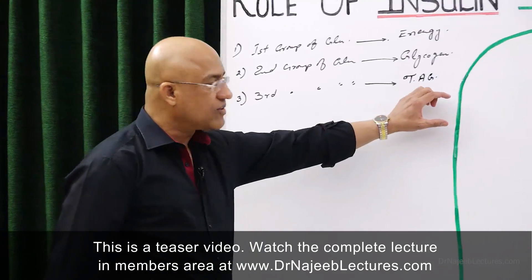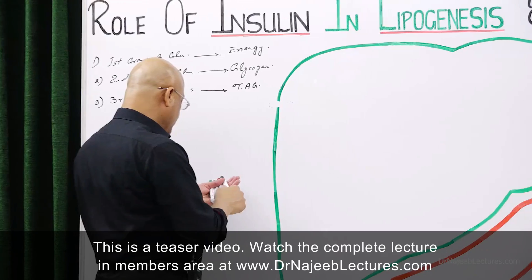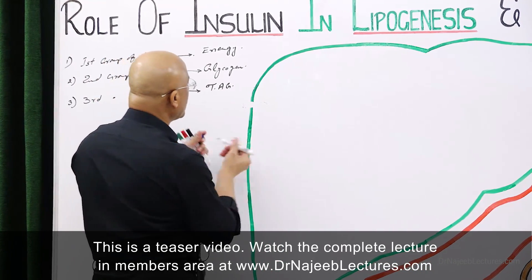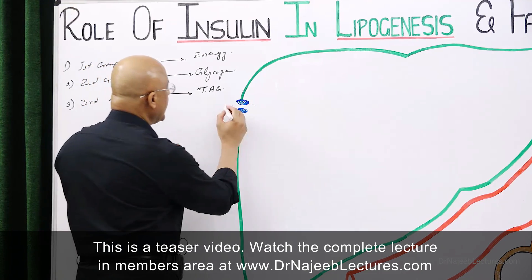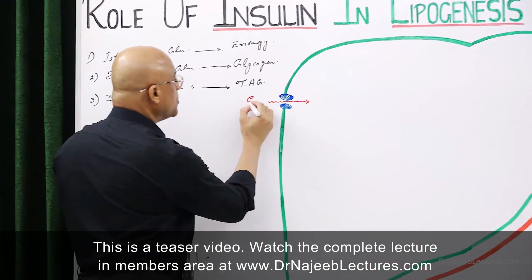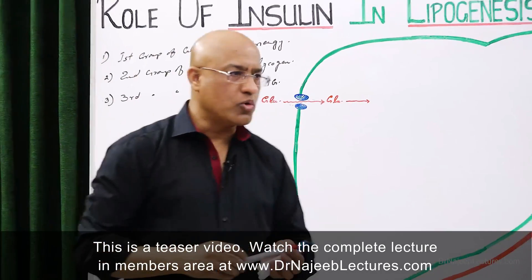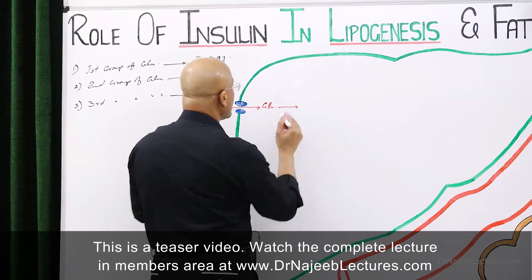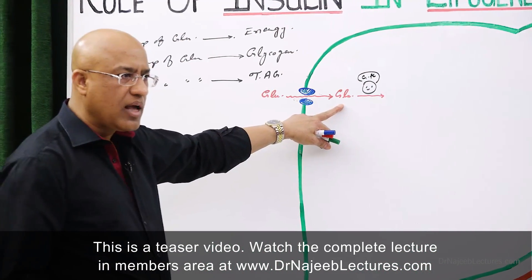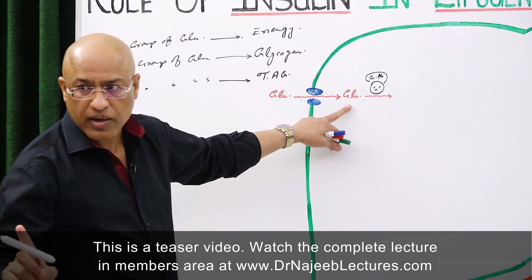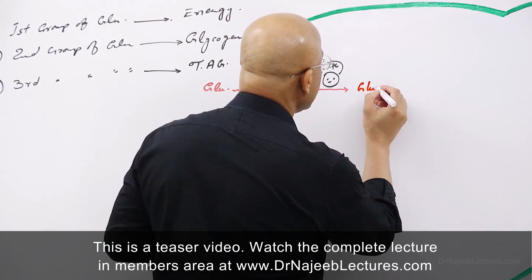Glucose molecules enter the liver and the liver converts them into fats. First, glucose enters the liver through a special transporter — GLUT2. Once glucose has entered, it will be acted upon by the enzyme glucokinase. Glucokinase will take the glucose molecule and phosphorylate it, and the phosphorylated glucose is converted into glucose-6-phosphate.